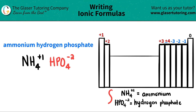So just memorize these — use flashcards, do whatever you've got to do to memorize these polyatomics because they're never going to be on the periodic table. Now since we have the two components, all we're going to do is take these charges and crisscross them to determine how many of each component we need.